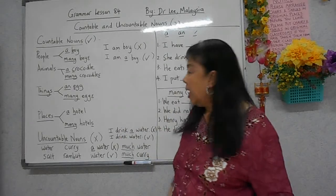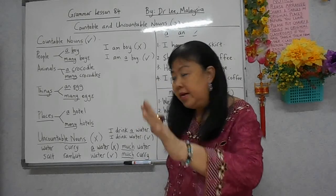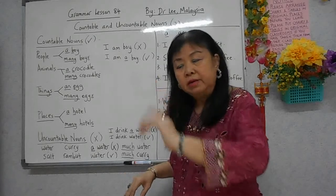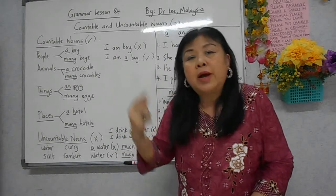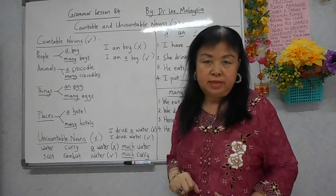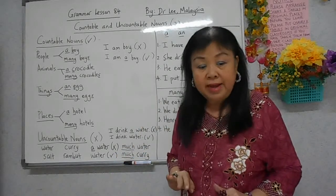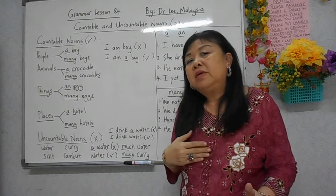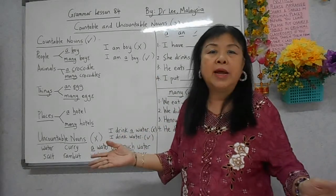Sebaliknya, benda yang tidak boleh kira, kita tidak boleh tulis 'a' atau 'an'. Contoh, saya minum air. Kamu tidak boleh cakap 'I drink a water' - salah. Betulnya 'I drink water'. Tetapi mungkin kamu boleh cakap 'I drink a little water', 'some water', atau 'a lot of water'.